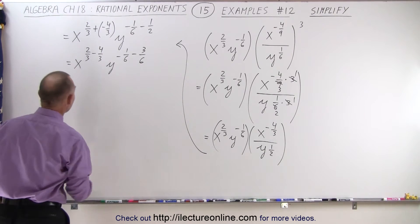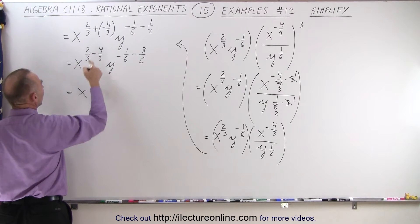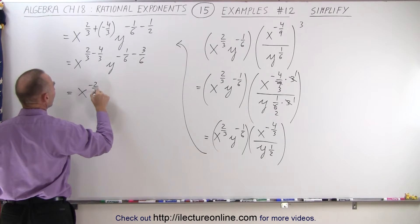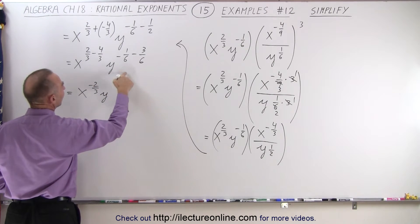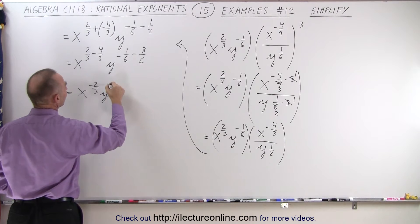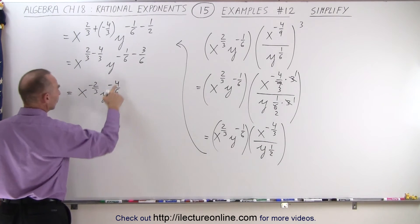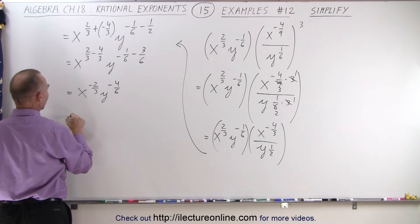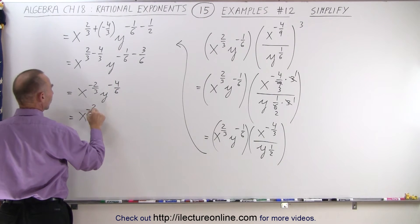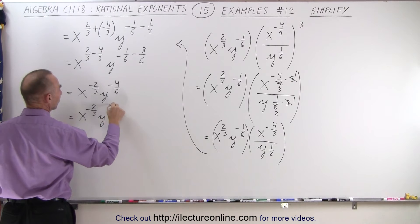Now I can go ahead and combine the exponents. So this is equal to x to the two-minus-four, which is minus two-over-three, and y minus one-sixth minus three-sixths, which is minus four-sixths. Well, this one can be simplified. So this is equal to x to the minus two-thirds times y to the minus two-thirds,